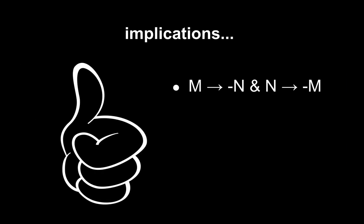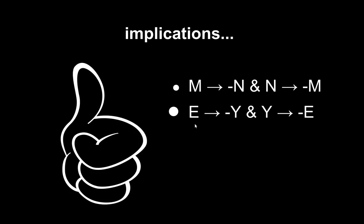Now, how are these logically related? Everything on this thumbs-up slide I'm giving you are claims that I say are obviously true if you're careful and pay close attention to the definitions. I'm using an arrow for if-then, and a minus symbol to mean not. So: if monotheism is true, then naturalism is false — because monotheism posits a being which is the source of everything else and isn't a physical being. And if naturalism is true, then monotheism is false. You can't hold both. If evolution is true, then young earth creationism is false; and if young earth creationism is true, then evolution is false.